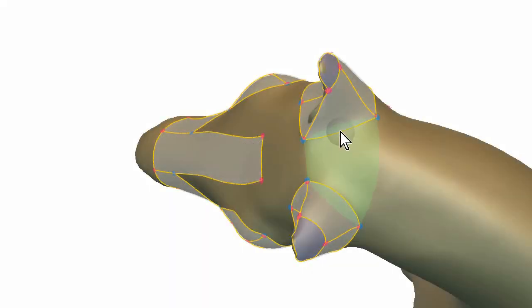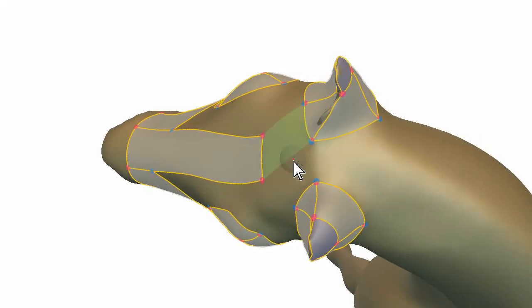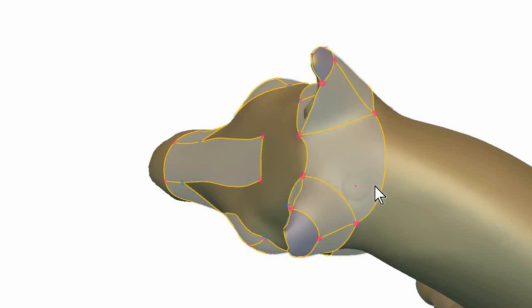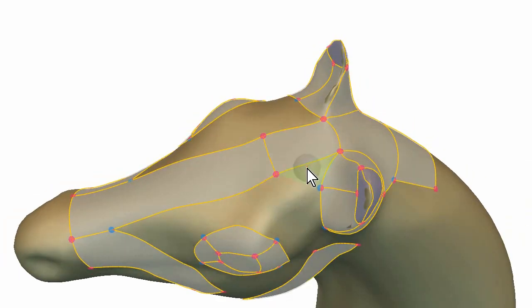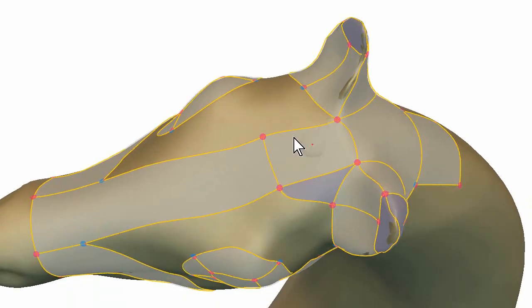This tool suggests a patch that can fill a gap between existing patches. As the user moves the mouse, the system displays a suggestion in real time. The user can accept the suggestion by clicking. By default, the system suggests the largest possible candidate patch, but the user can also choose other smaller alternatives. The system can also suggest a triangular patch.